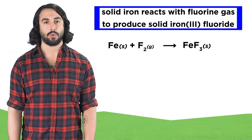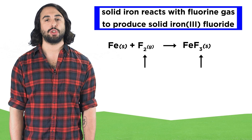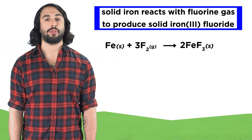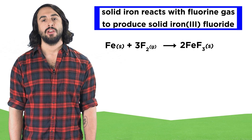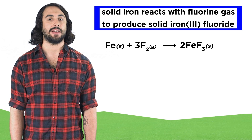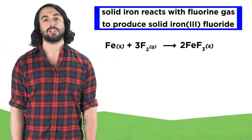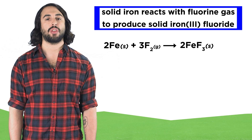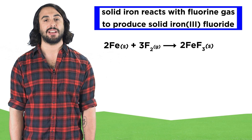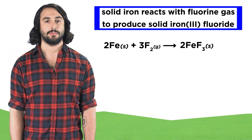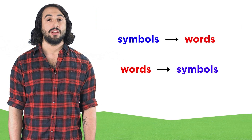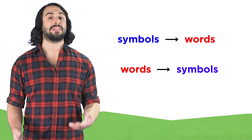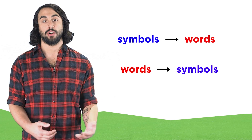Lastly we might want to balance the equation. We can see that we have two fluorines on the left and three on the right, so let's put a three here and a two there, so that we have six on each side. Now we also have two irons on the right, so let's put a two here so that we have two irons on the left as well. And that's all there is to it — we should now be able to write chemical equations either with symbols or with words.